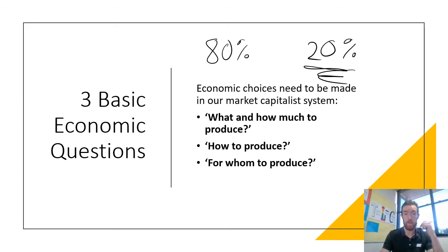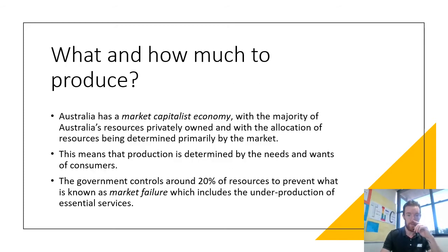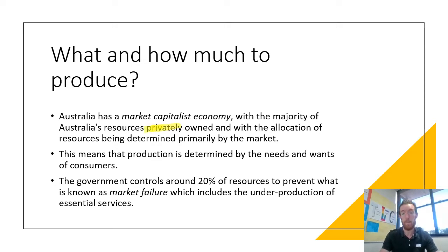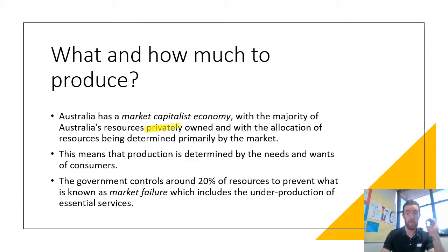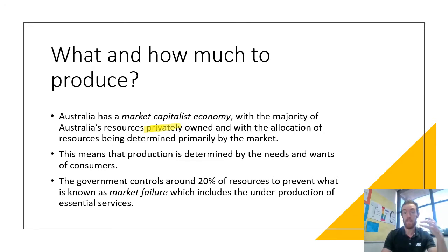The first question is: what and how much to produce. In our market capitalist economy, the majority of resources are privately owned and the allocation of resources is determined primarily by the market. That means the forces of supply and demand decide what is going to be produced. Whatever consumers need and want dictates what will be produced, so businesses will make what society wants. They want their products to sell, and if they don't make what society needs, they will go out of business.